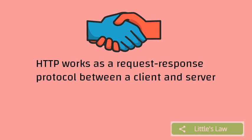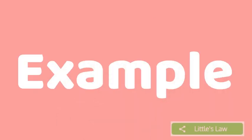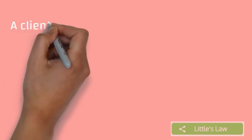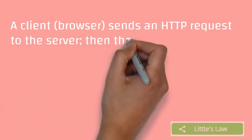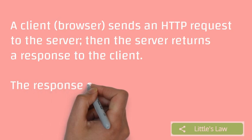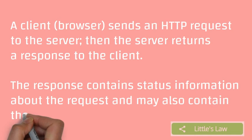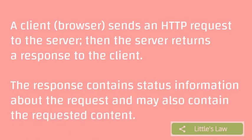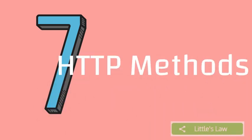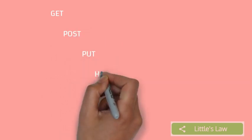The messages sent by the client, usually a web browser, are called requests, and the messages sent by the server back as an answer are called responses. For example, we search a name on Google — we are sending a request to the Google server and we get back the result as a response. The response contains the status information and the requested content. When talking about HTTP request methods, we have seven types of frequently used HTTP methods.